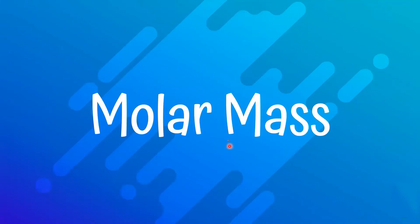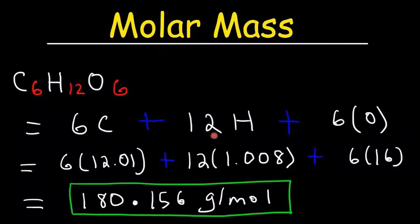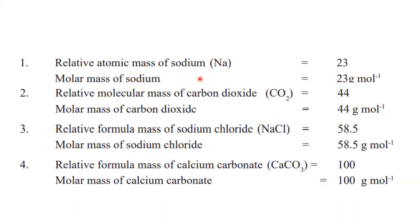Let's discuss molar mass. Molar mass is the mass of one mole of any substance. Although relative atomic mass and relative molecular mass have no units, molar mass has units of grams per mole (g mol⁻¹) or kilograms per mole (kg mol⁻¹). For example, the relative atomic mass of sodium (Na) is 23, so the molar mass of sodium is 23 g mol⁻¹. Carbon dioxide has a relative molecular mass of 44, so its molar mass is 44 g mol⁻¹.